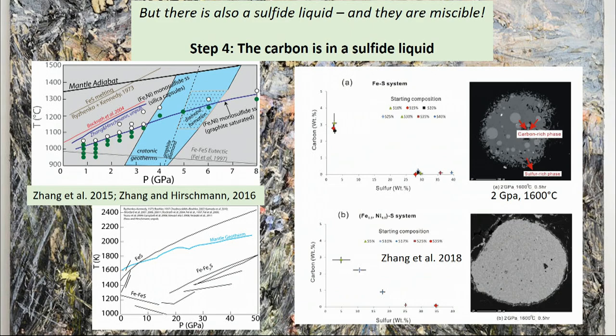Experiments show a carbide liquid and a sulfide liquid coexisting, with measurable concentrations of carbon and sulfur in each. If one adds a small amount of nickel to the pure iron-sulfur system, the miscibility gap disappears, and you have completely miscible iron-nickel-carbon-sulfide liquid. So in order to understand where the carbon might be, you have to consider its reactions with the sulfide liquid.